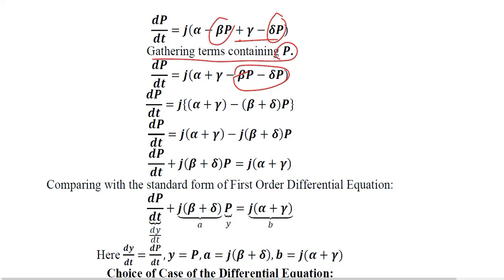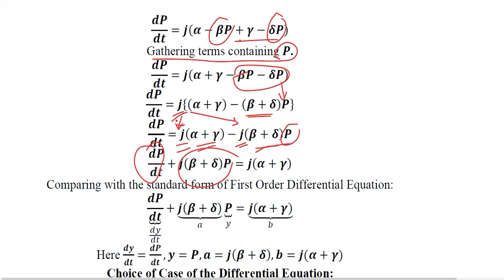We take P as a common factor, keeping beta and delta outside. J is then multiplied with both terms separately. One term contains parameters only; the other contains the variable P as well. We are rearranging because we have the derivative of P with respect to time and a term containing P, making this adjacent to the first-order differential equation form.